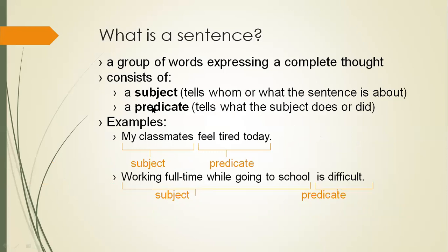So, before the beginning, what is a sentence? We should know about this. A sentence is a group of words expressing a complete thought and it consists of a subject and a predicate. A subject tells whom or what the sentence is about. A predicate tells what the subject does or did.